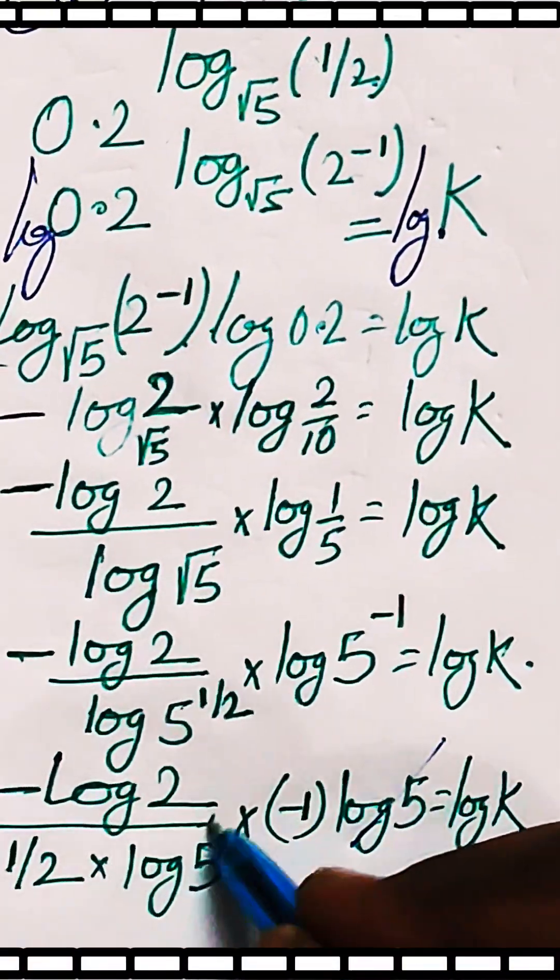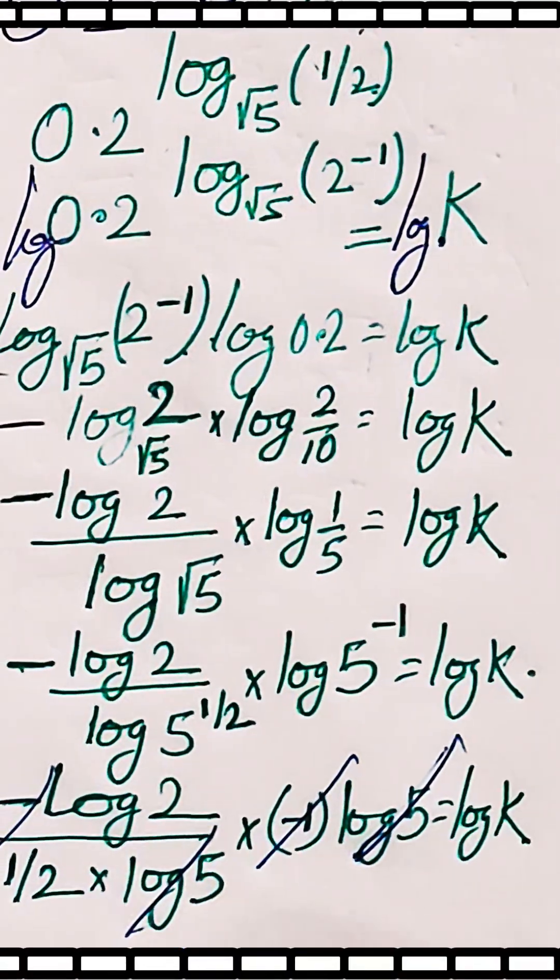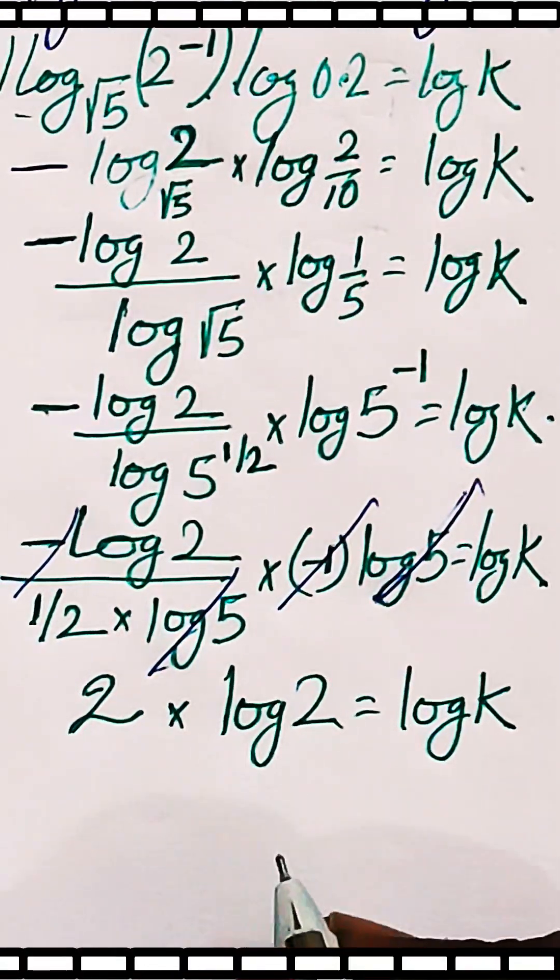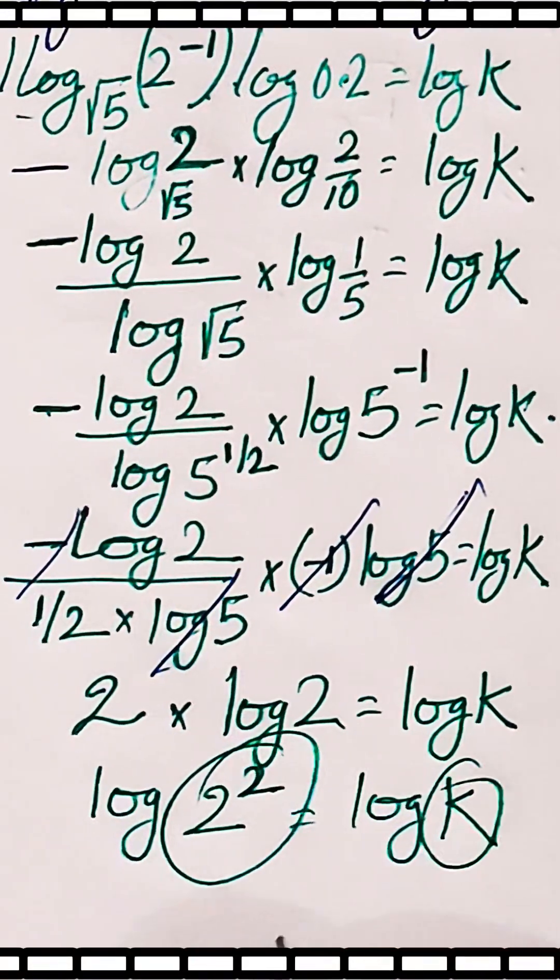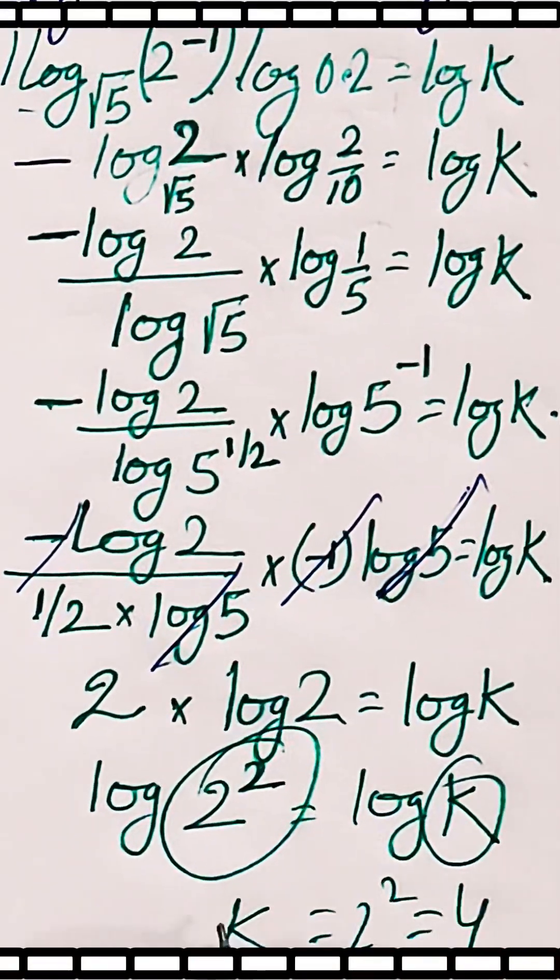Here log 5 will be cancelled, and minus 1 will be cancelled. We retain 2 log 2, which gives us log 2 square equals log k. Therefore, k equals 2 square, which equals 4.